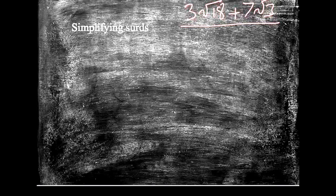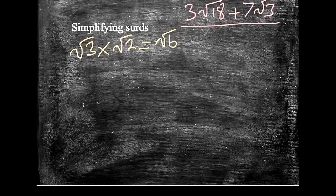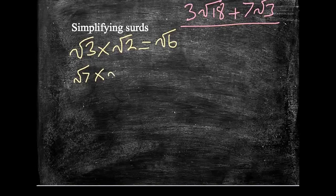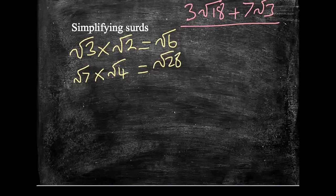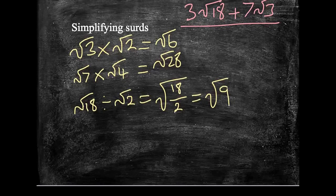When we simplify surds, there's a really cool thing that you can do for multiplying and dividing surds. Root 3 multiplied by root 2 is actually root 6. So when you're multiplying, you can actually just multiply the numbers and stick them back under the root sign. Equally, I could say that I've got root 7 multiplied by root 4, and this is the same as root 28. Similarly, if I've got root 18 and we were dividing by root 2, that would be the same as the square root of 18 divided by 2, which is the same as the square root of 9.